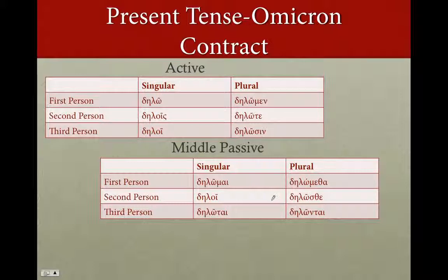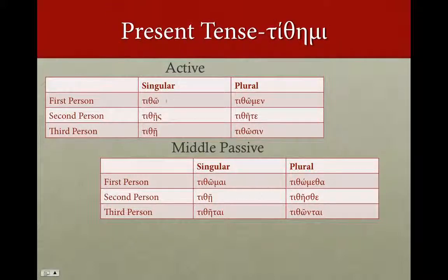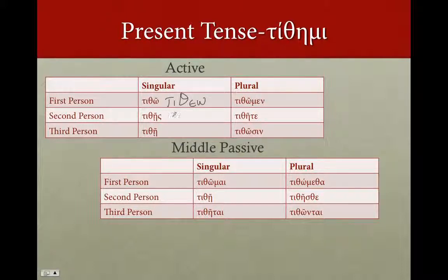Now, mi-verbs. Mi-verbs too are going to have to contract. So titho — actually tithe-o — which is going to contract. Tithase, you'd expect to contract like an epsilon contract, and it does. So titho, tithase, tithe, thelmen, titheta, tithosin. And in the middle passive: tithoma, tithe, tithetai. That covers mi-verbs in the subjunctive in general.